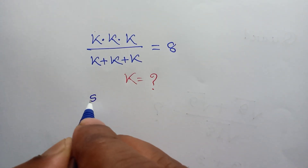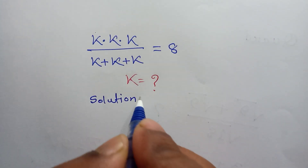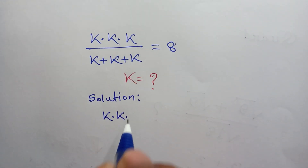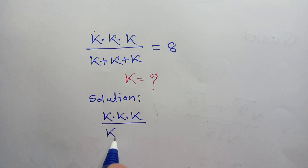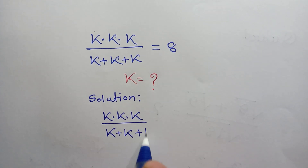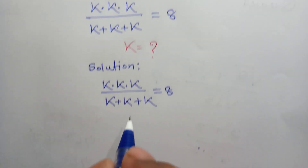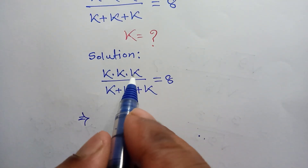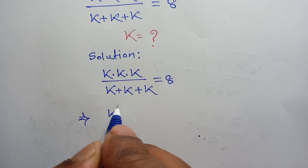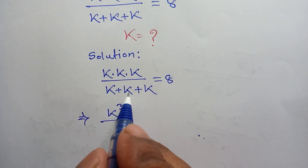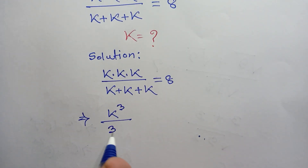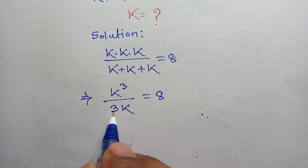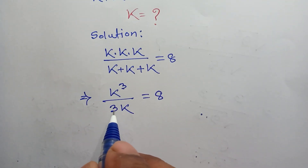Let's solve this. We have k times k times k over k plus k plus k is equal to 8. First of all, k times k times k is k cubed, and k plus k plus k is 3k, so we get k cubed over 3k equals 8.